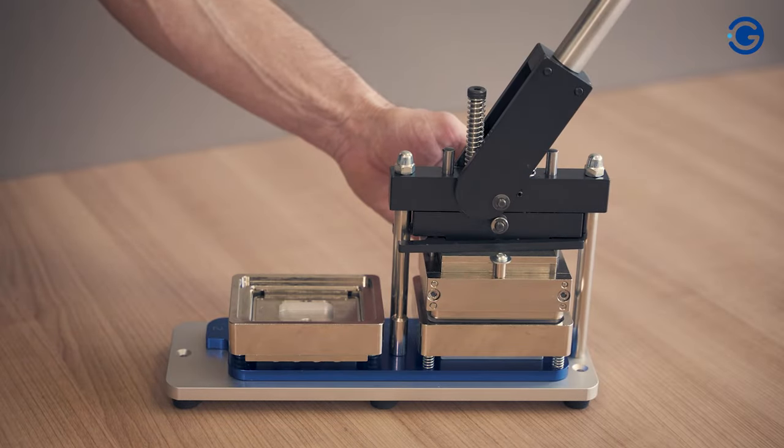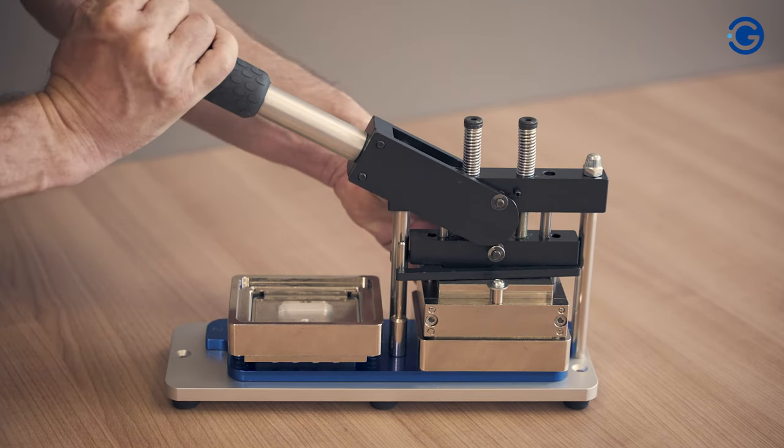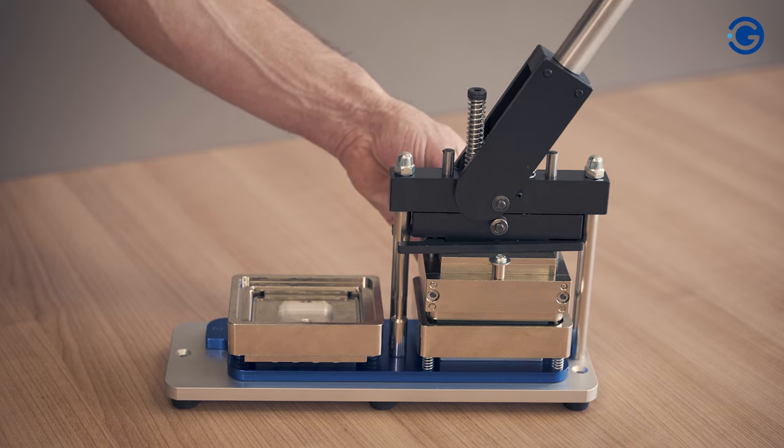Turn the blue base until it stops. Mould number one is correctly positioned under the top mould. Pull the lever down until it stops. Do not use excessive force.